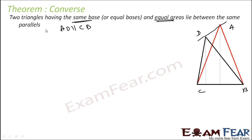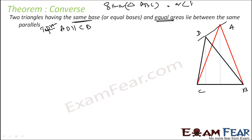AD will be parallel to BC. So what is given? We have triangle ADC with a certain area, equal to the area of triangle BDC. So both triangles have the same area, and DC is the common base as you can see.